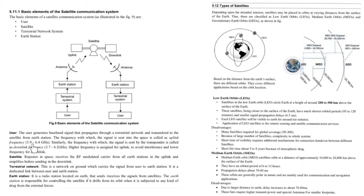The higher frequency is assigned for uplink to avoid interference, and the lower frequency for the downlink. Comparatively, uplink will have more frequency than downlink to avoid interference of the signal.